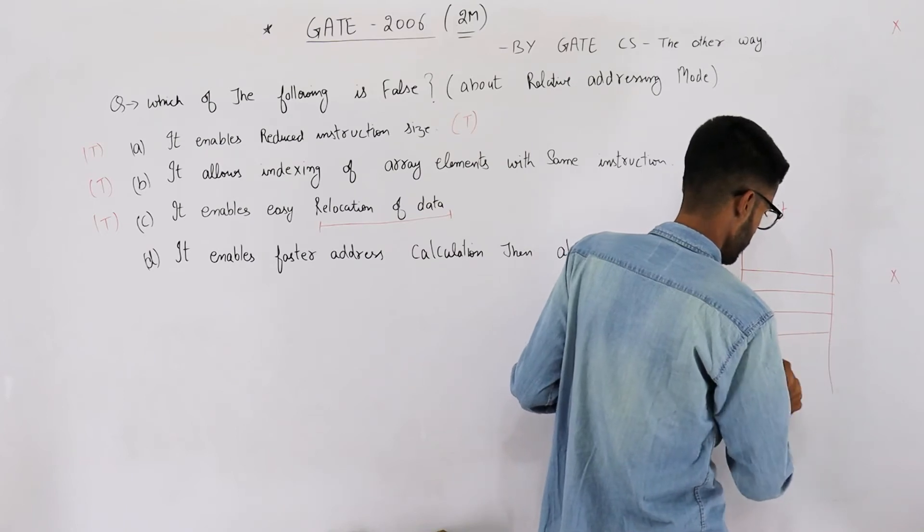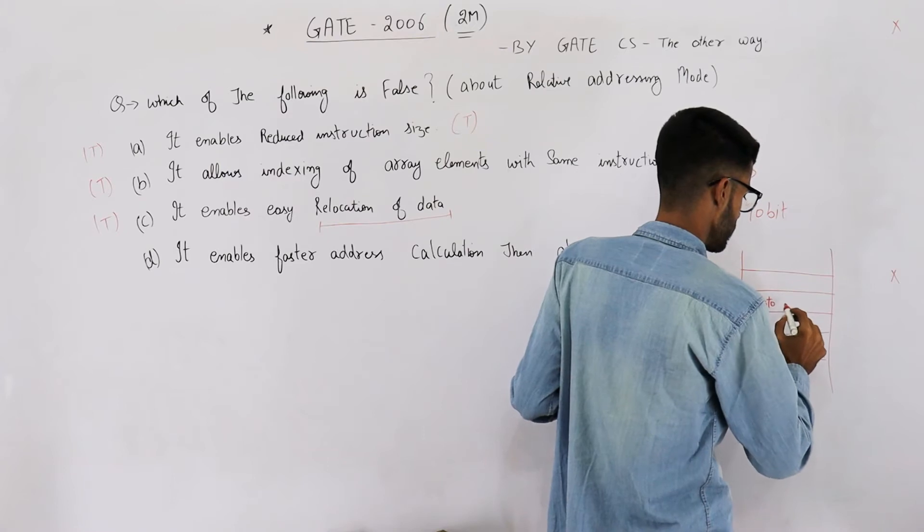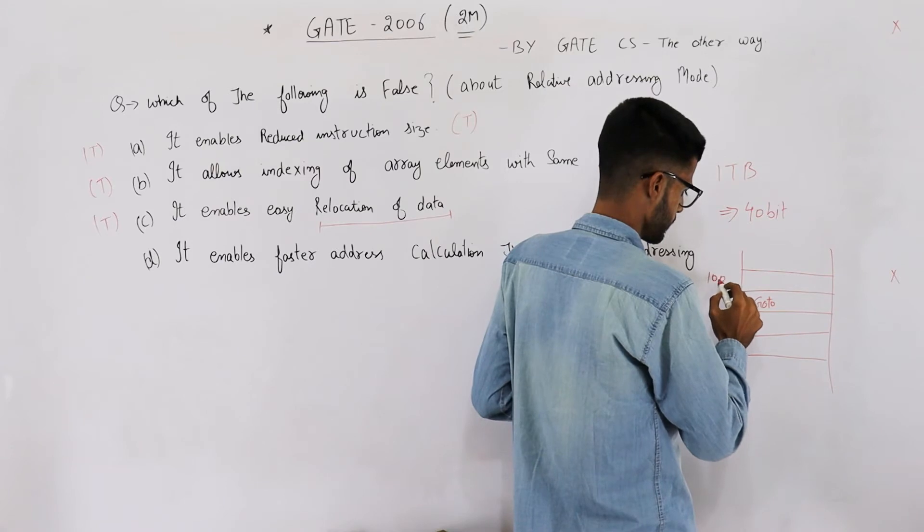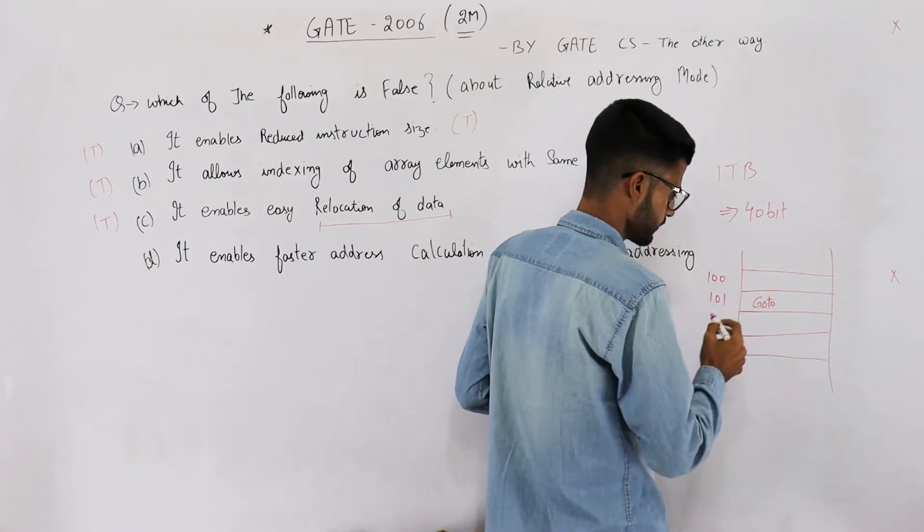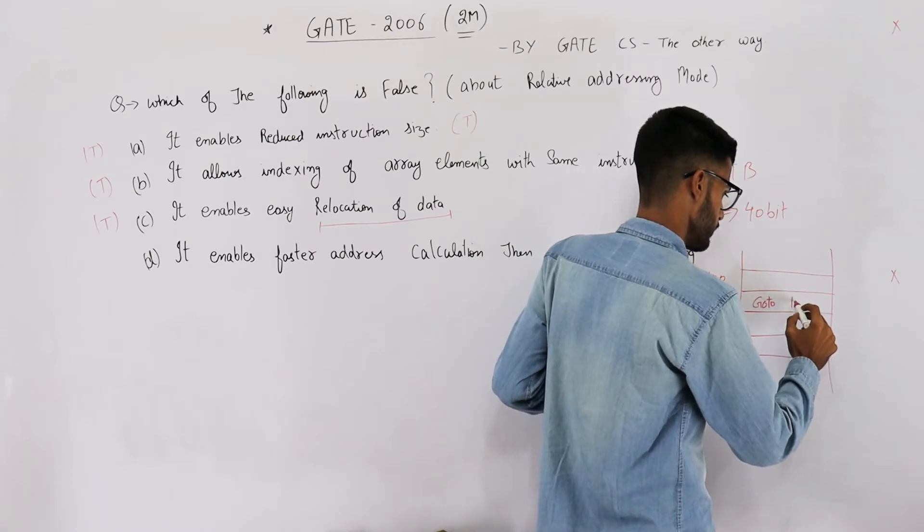For example, somewhere in your program you have written goto. First of all, let's see the base address. Base address is 100, and on line number 101 you have written goto 103.